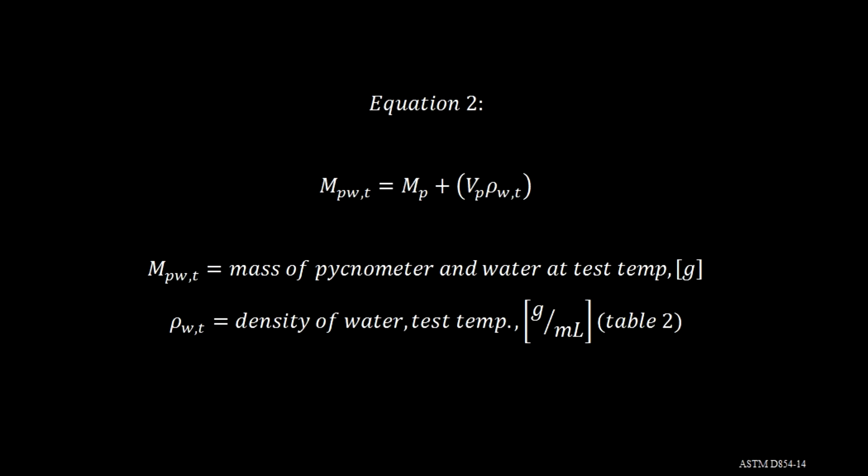Equation 2 states that the mass of the pycnometer and water at test temperature equals the mass of the pycnometer plus the volume of the pycnometer multiplied by the density of the water at test temperature.